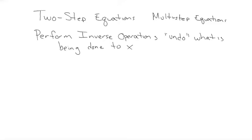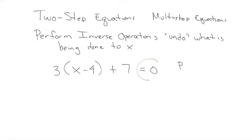I'm going to show you, following order of operations, what it means to do the thing to x, and we're going to figure out how to undo it. That is an equation, and if I want to solve it, I need to get x by itself. What we're going to do now is pretend it's not an equation — pretend the equal sign and zero do not exist — and just talk about order of operations.